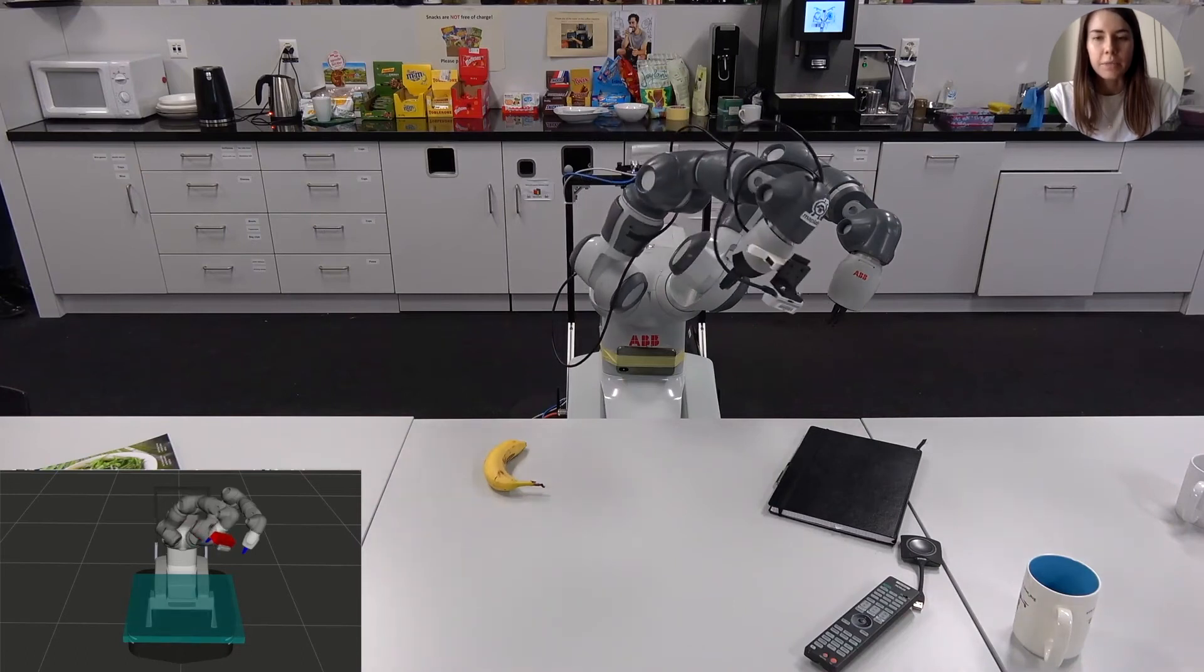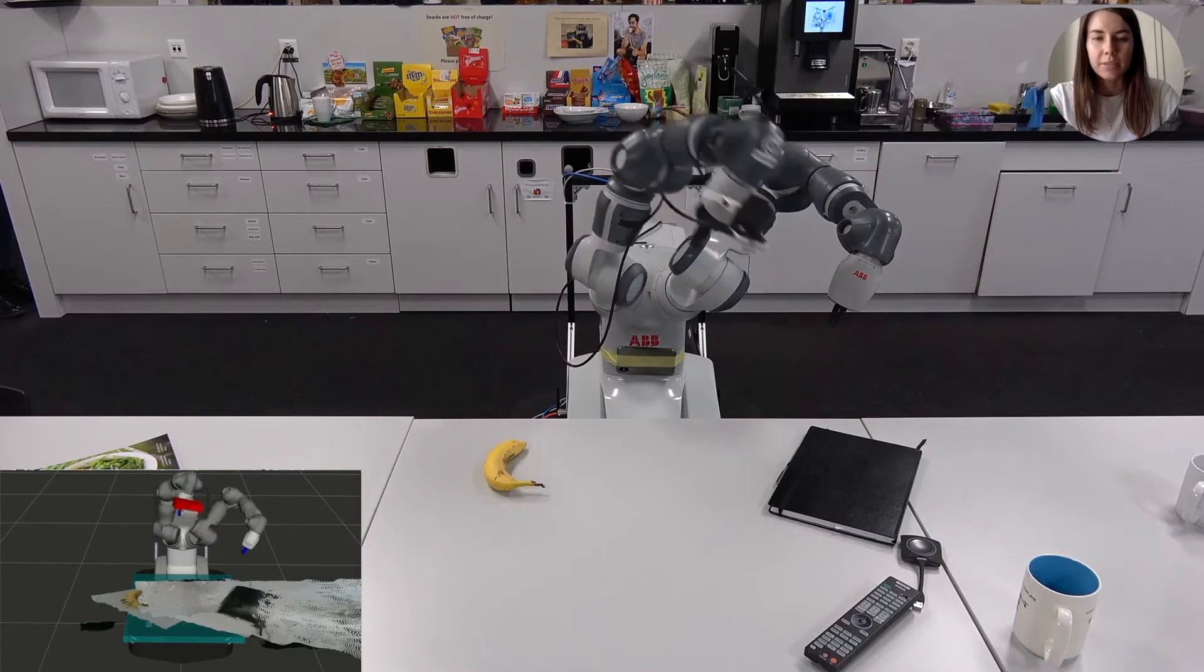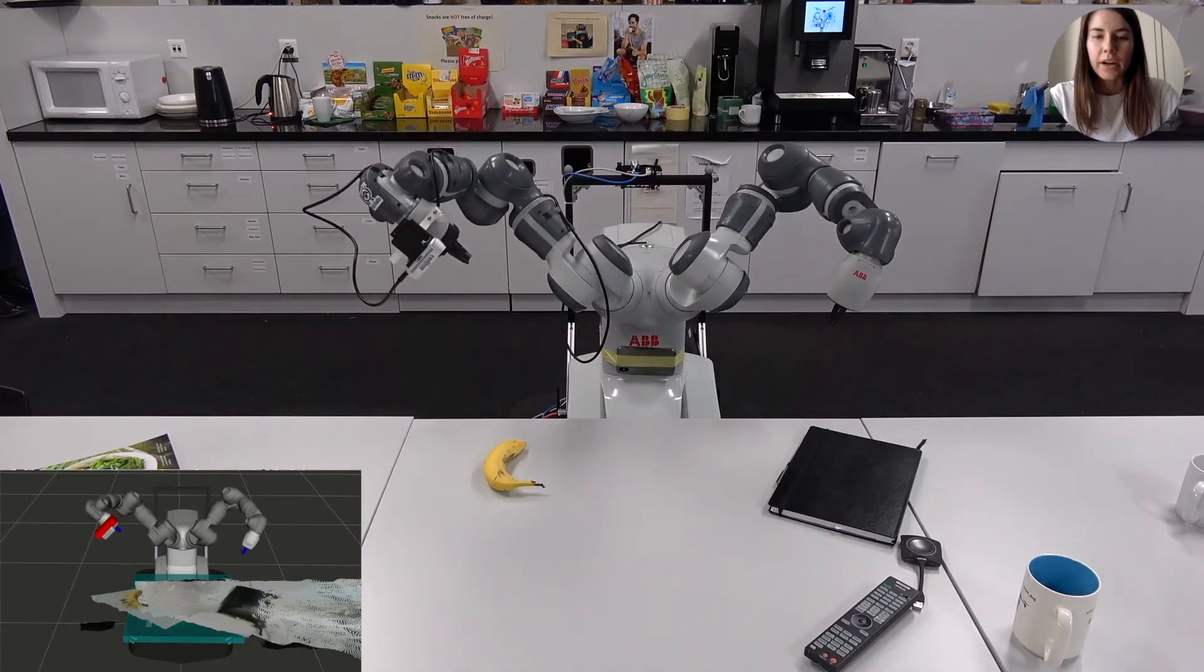For this, we can either use Voxblox++, a volumetric instance-aware semantic mapping framework, or we can directly accumulate the captured point clouds. The latter option, however, would not allow us to unambiguously identify the target object in clutter. In this setting, we opt for the point cloud stitching approach due to the limited on-board computational resources.